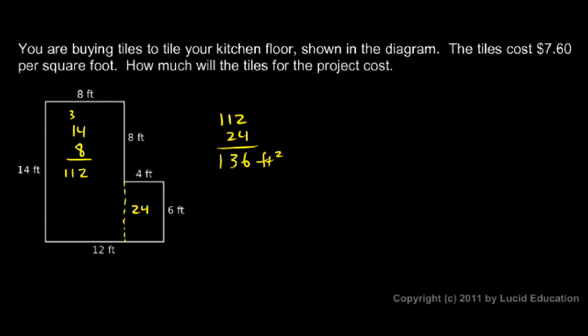Now, $7.60 is the cost per square foot. So I need to take my 136 square feet and multiply it by 7.60. And I can put a 0. And I can put a 0 here as a placeholder and then do the multiplication.